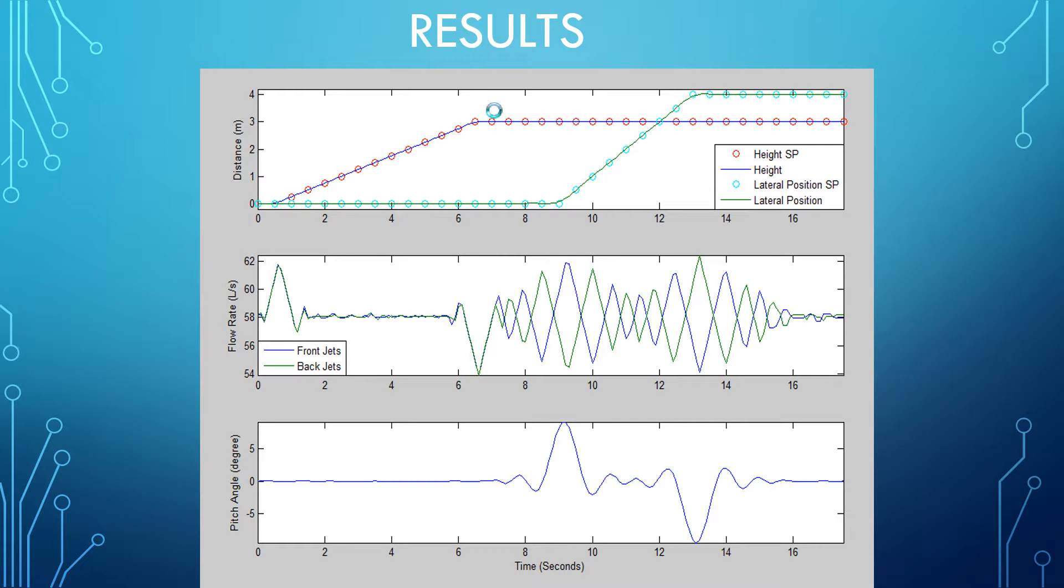As we can see from this graph, the model was accurately able to describe the height change and lateral displacement. The interesting thing to note is what happened to the flow rate and angle change. For the height displacement, it was pretty much what we expected. We had a pulse to allow initial change along with a constant flow to keep you moving, and then an inverse pulse to stop the movement.